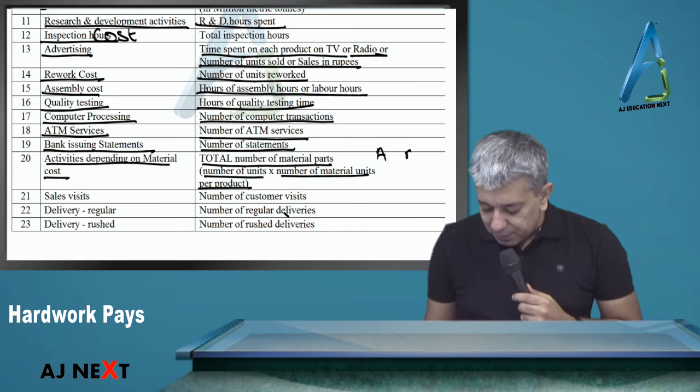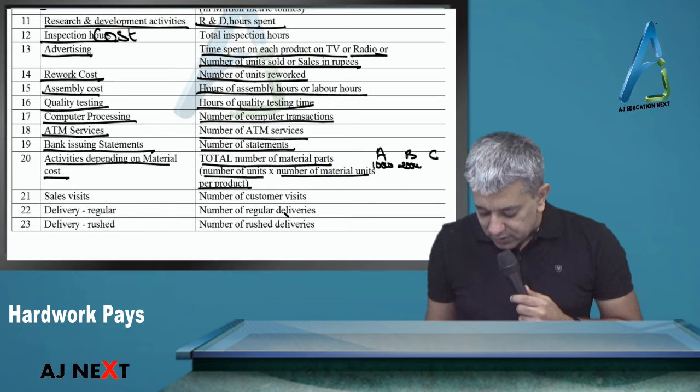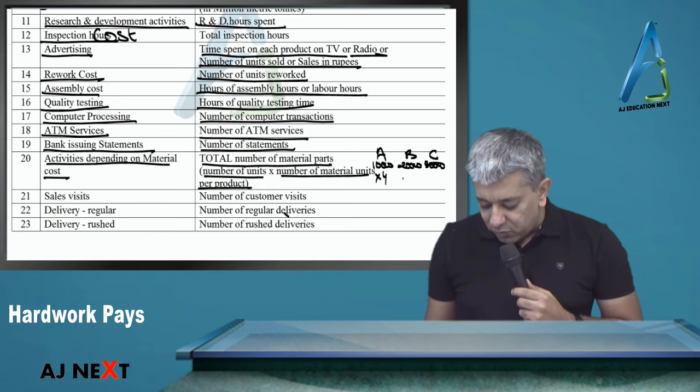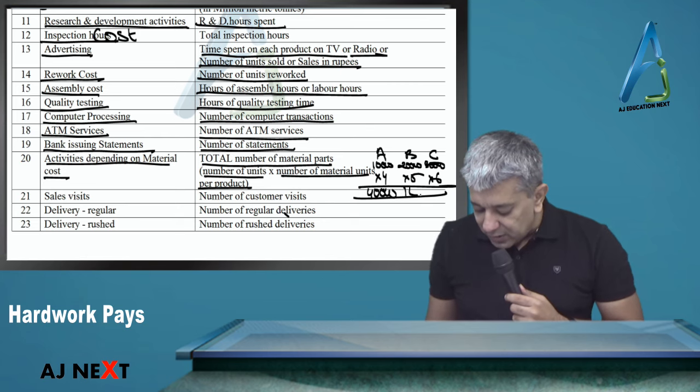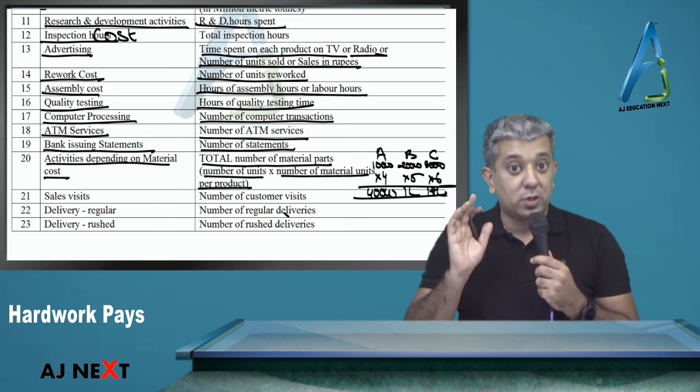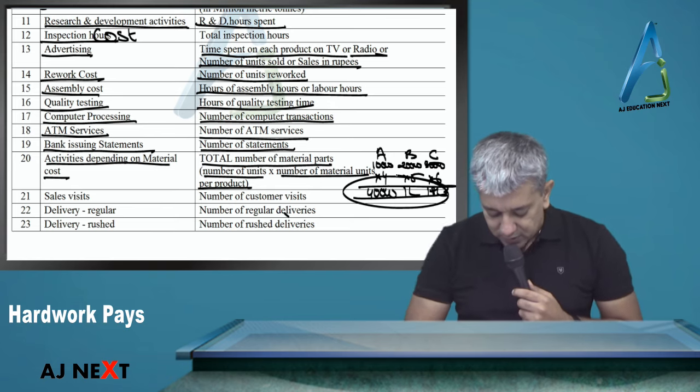For example, product A, B, C. We'll make 10,000 units of this, 20,000 of this, 30,000 of this. For each unit of A, 4 units of raw material are needed, 5 for B, 6 for C. So your total material parts for product A will be 40,000, for B 1 lakh, for C 1.8 lakhs. Divide in that ratio.